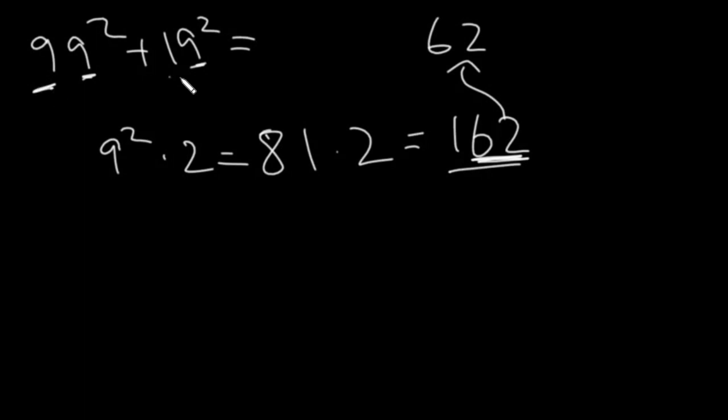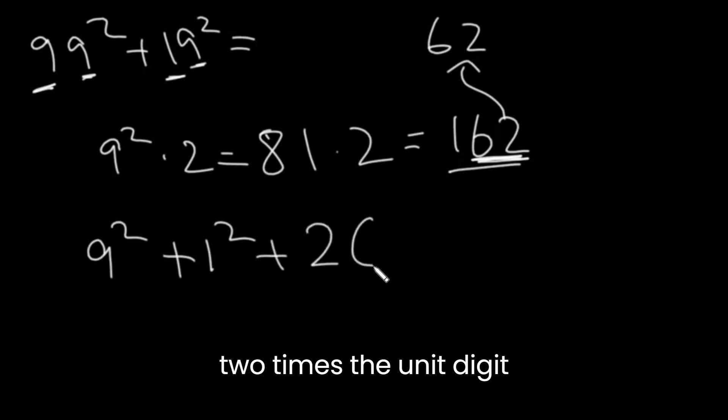Then we take this 9 and we take this 1, and then we add the squares of those together. So 9 squared plus 1 squared. Then we add that to 2 times the unit's digit. In this case, it's 9.